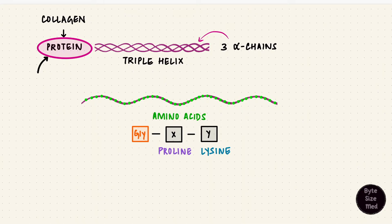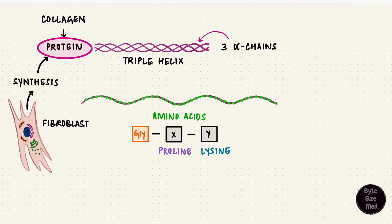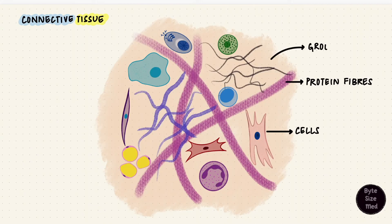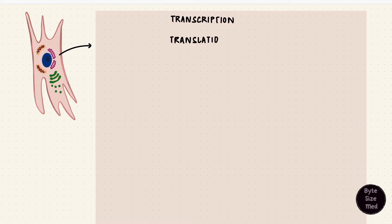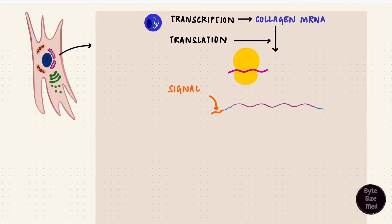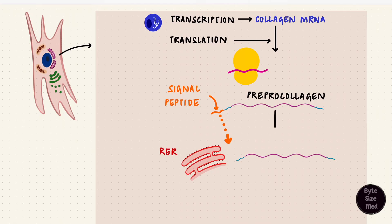This protein has to be synthesized, and that happens usually in the fibroblast. Fibroblasts are the cells that synthesize the proteins that then form the fibers and ground substance. The initial steps of synthesis are similar to any protein synthesis — transcription and translation. Transcription forms messenger RNA, which is then followed by translation at ribosomes. That forms a peptide chain with a leader sequence called a signal peptide — this is pre-procollagen. That signal peptide guides the peptide chain into the cisternae of the rough endoplasmic reticulum, where enzymes remove the peptide sequence. This is procollagen.